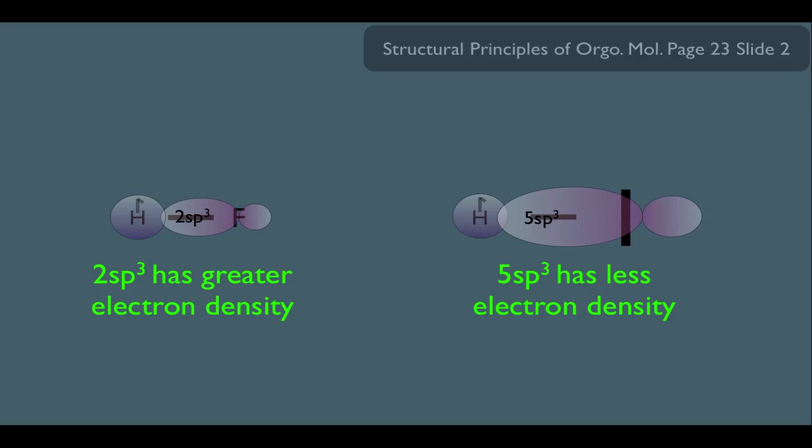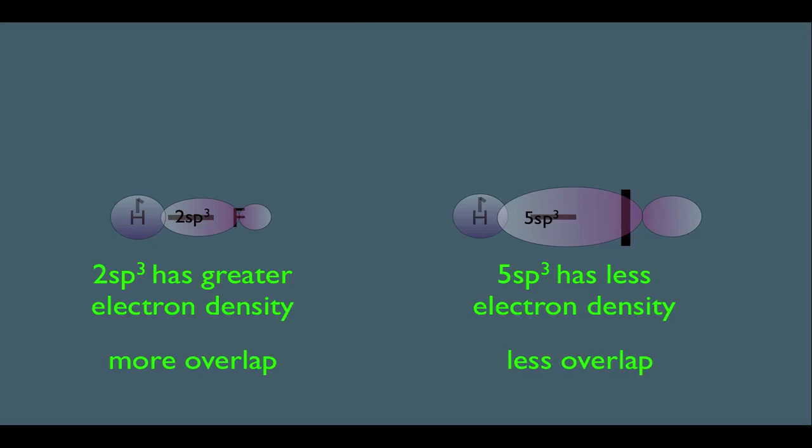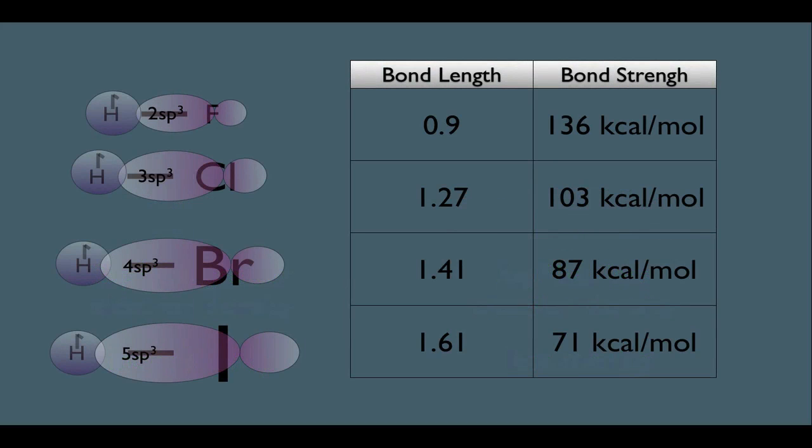What we need to understand here is that greater electron density leads to more overlap of the orbitals. And more overlap means a stronger bond. So the less electron density of the five SP3 orbital would have less overlap and therefore have a less strong bond. So that is why we get the trends that we get here.